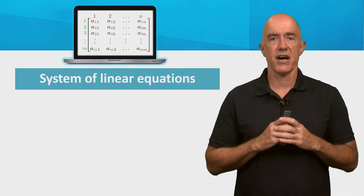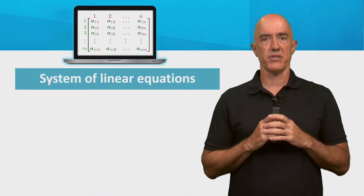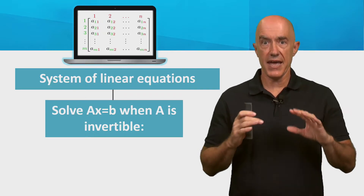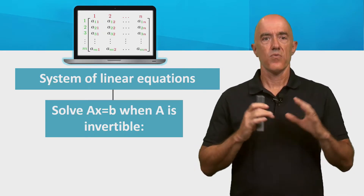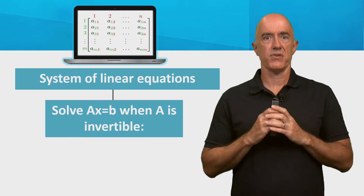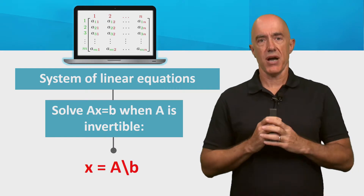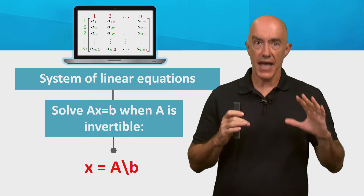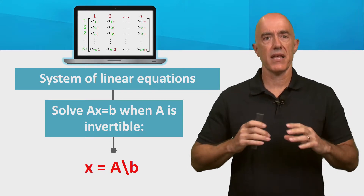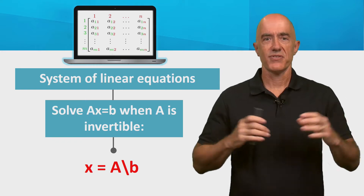Let's see how to solve a system of linear equations. We are solving AX equals B, where A is an invertible matrix. We can use the backslash operator — X is just equal to A backslash B. So easy.